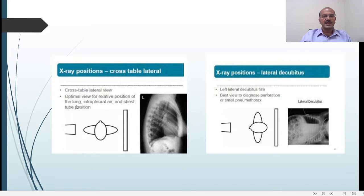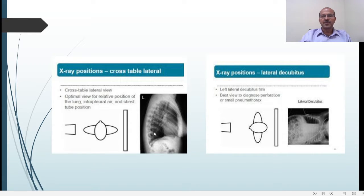It's a good position to see the position of the lung, intrapleural air, and chest tube position. You can also differentiate structures in relation to the mediastinum — anterior, middle, and posterior. The lateral decubitus, however, has the patient turned to the side, with the plate kept behind the baby or patient.